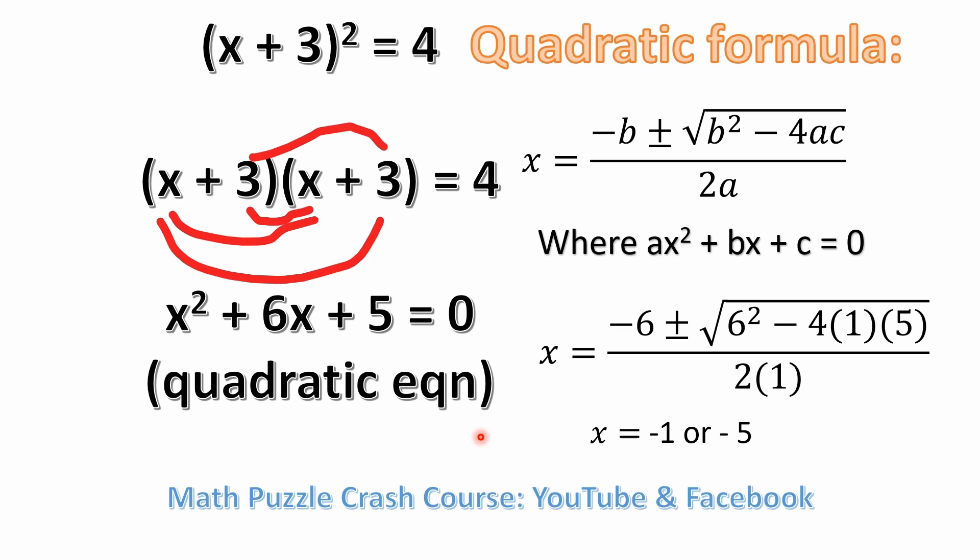But if you take x plus 3 quantity squared and you multiply them together, squaring means you've got x plus 3 in parentheses times x plus 3 in parentheses. That's the equivalent of x plus 3 squared.